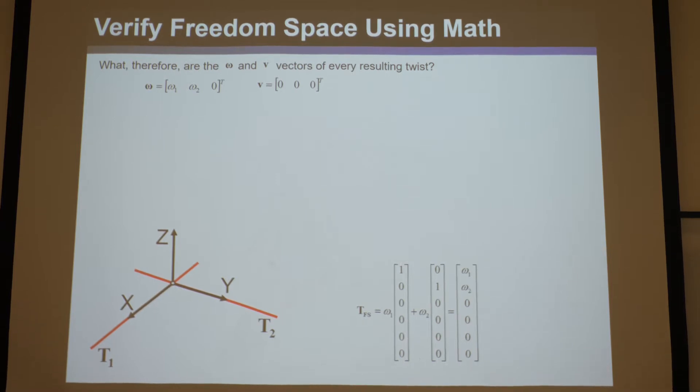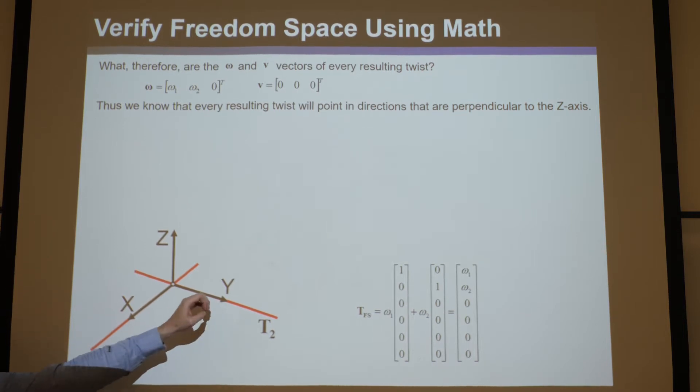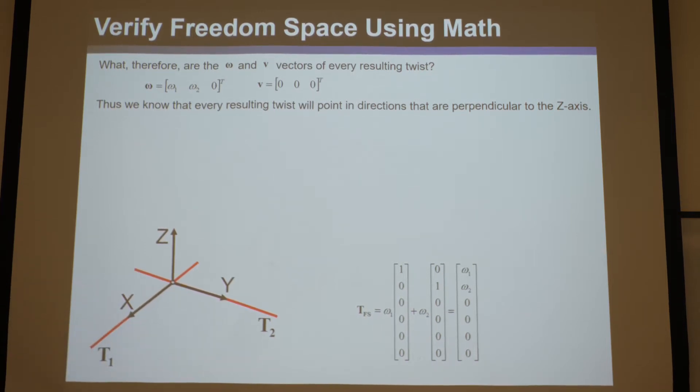First of all, we already know from this that all the twists that result from linearly combining these will point in a direction perpendicular to the z-axis. How do we know that? Because there's a component in x and a component in y, but not a component in z, which means every resulting twist could have a component in x and y, but its z has to be 0, which means it has to be perpendicular to z. So that's the first clue. All the twists that result from linearly combining these two will be perpendicular to the z-axis.